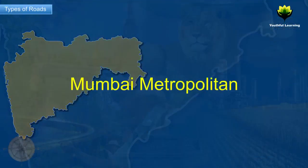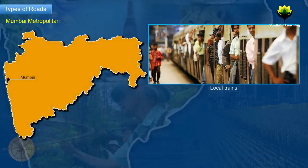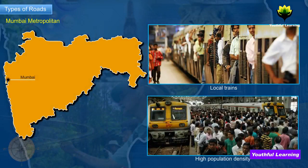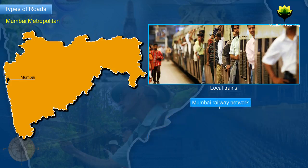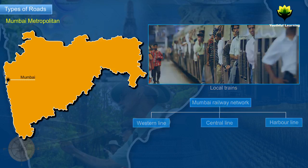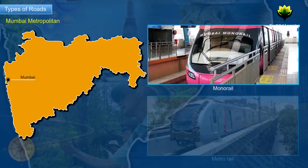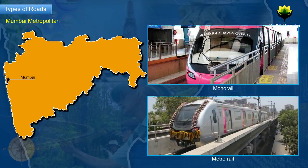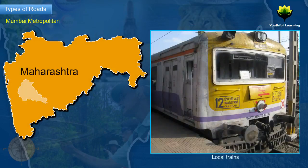Mumbai Metropolitan. Local trains form the lifeline of the Mumbai Metropolitan region which has a high population density. The local railway network in Mumbai region is divided into the Western, Central and Harbour line. Recently, the monorail and the metro rail have started operations in Mumbai. Local trains in Pune run between Pune City and Lonavala.